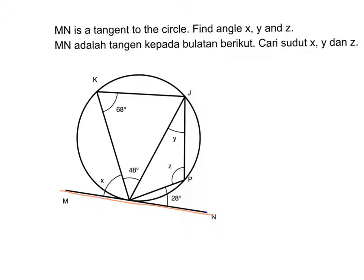Now let's find x first. This is x, and this is the chord. So x is equal to the angle that is subtended by this chord in the alternate segment.